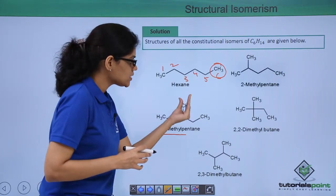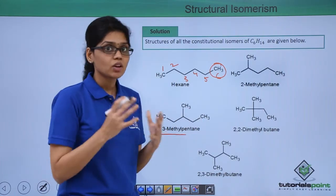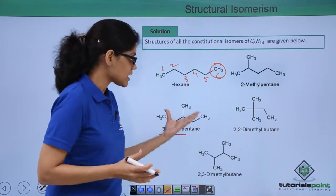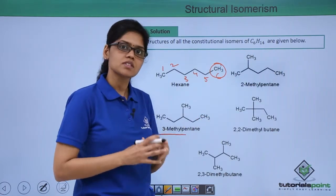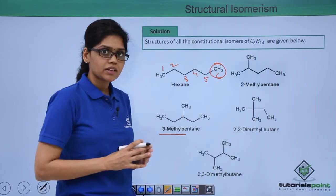Now if I further change the position of the methyl group from the 3rd to 4th carbon atom, you're not getting any new structure because that structure would be exactly the same as 2-methylpentane. So we now have 3-methylpentane.